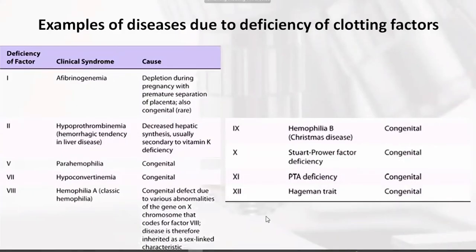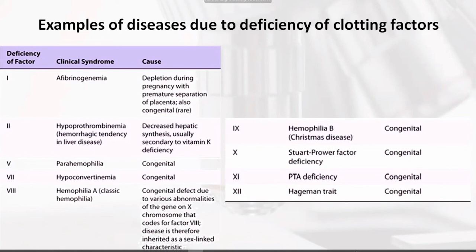Factor 11 is basically plasma thromboplastin antecedent, or anti-hemophilic factor C. When it is absent, PTA deficiency will form, and it is also a congenital disorder. Factor 12 is known as Hageman factor, or glass factor, or contact factor, or anti-hemophilic factor D. In the absence of this factor, Hageman trait disorder will form, and it is also a congenital disorder.